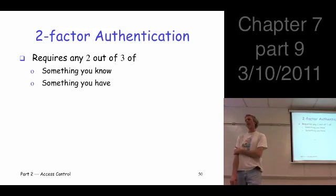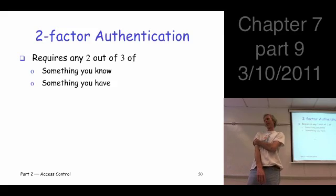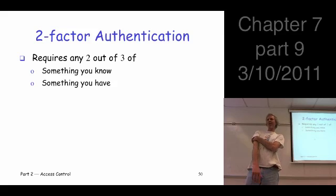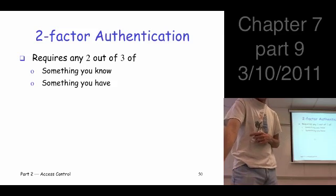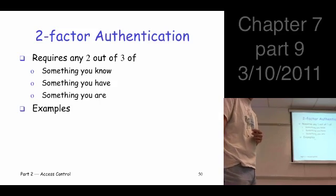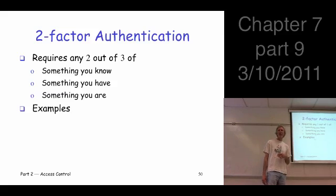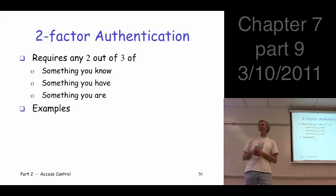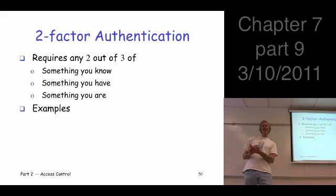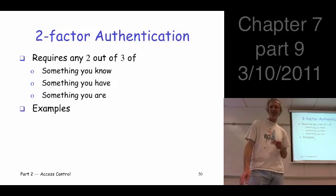Question: in the scenario where someone was checking handprints and weight, does that count as two-factor authentication? Not technically according to this definition — those would both be biometrics, but it's one and a half. Can you think of other examples? ATM card is a good one — you have the ATM card and you have to know the PIN. Smart card — you have a PIN or password to unlock it. Credit card and a signature — a really pathetic biometric — but it's two things.